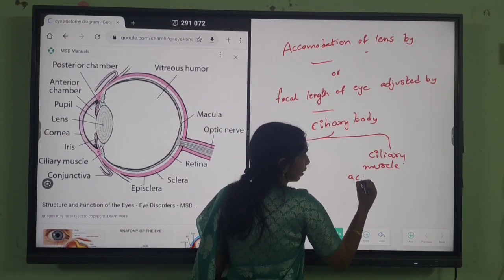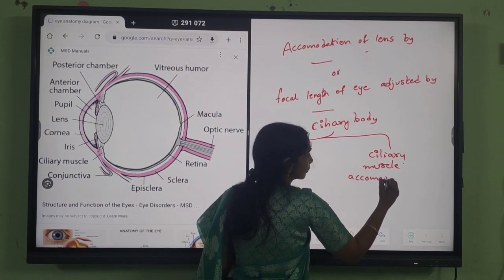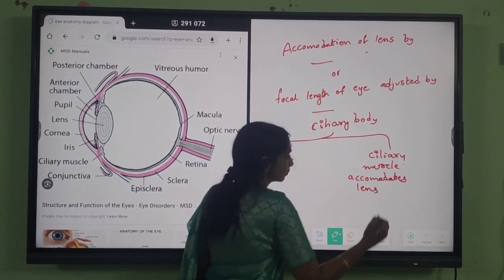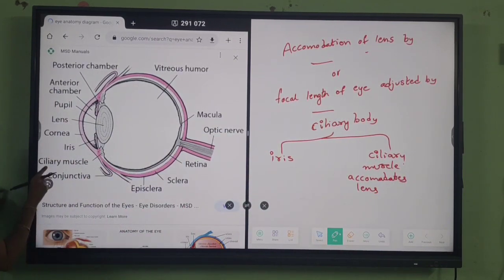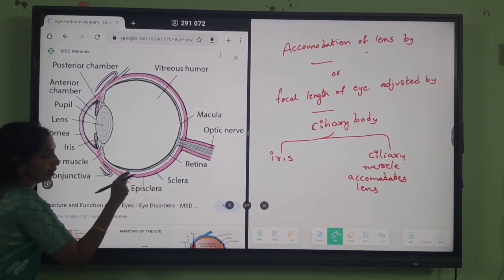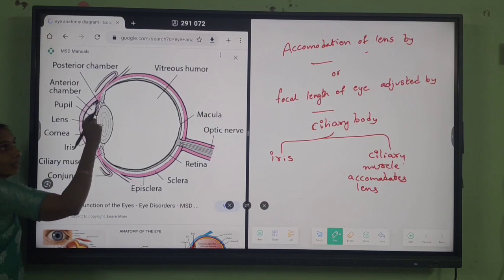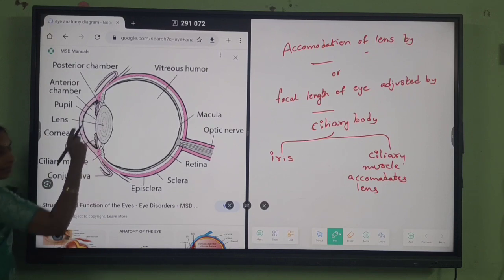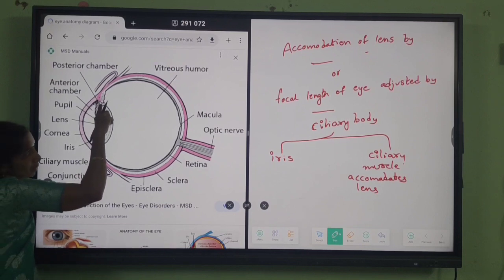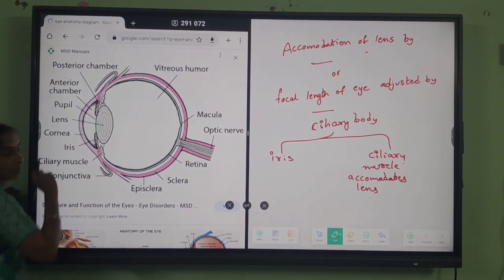So ciliary muscle accommodates lens. Once again, ciliary muscle which is a part of choroid accommodates this transparent lens according to the image. According to the image it can be made wide, can be made sharp.